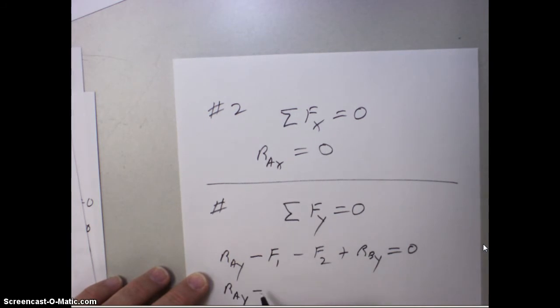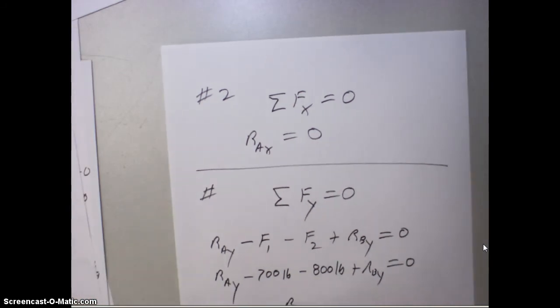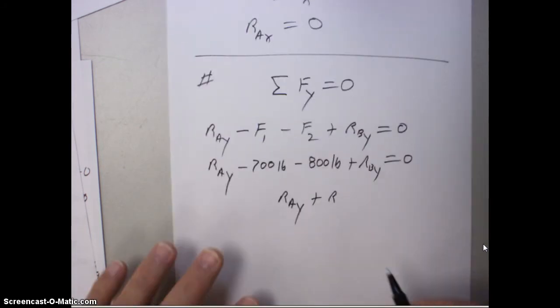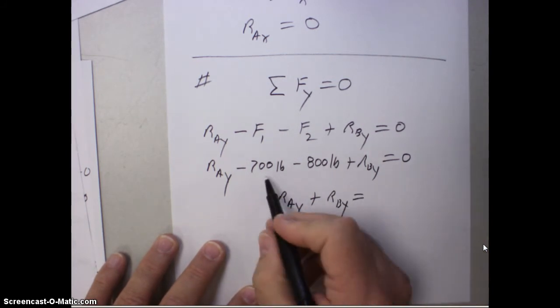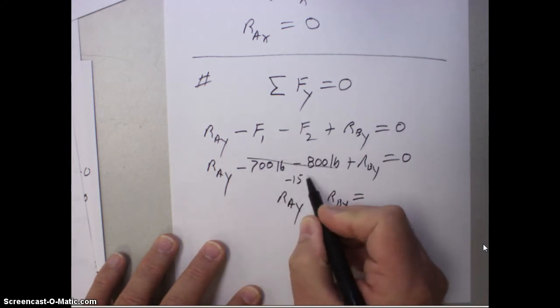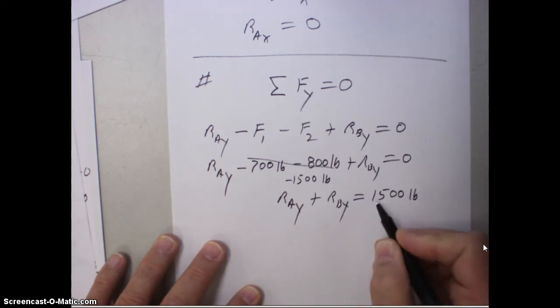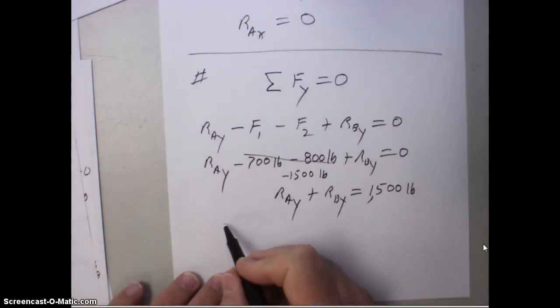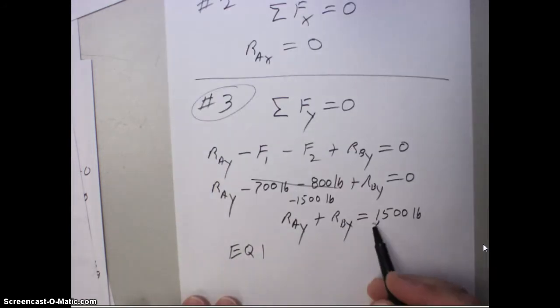So let's substitute some numbers in: RAY minus the 700 pounds, minus the 800 pounds, plus RBY equal to zero. Rearranging this a little bit, we get RAY plus RBY equal to (and this minus 700 pounds, minus 800 pounds) combining those gives us minus 1500 pounds. Adding 1500 pounds to both sides, we get a positive 1500 pounds on the right. Let's go ahead and call this equation one in step number three. So we're going to be using this equation again shortly.